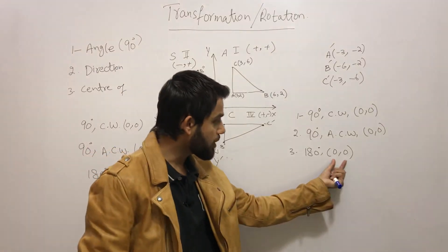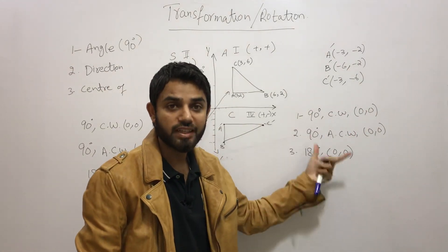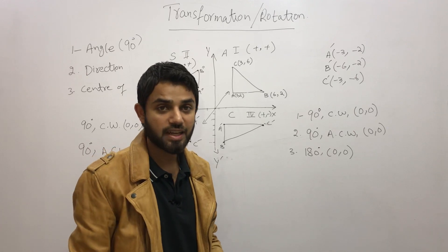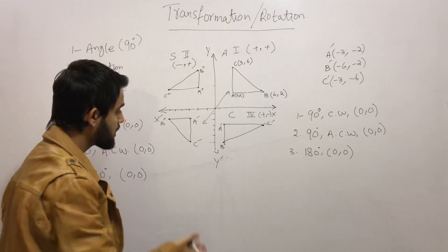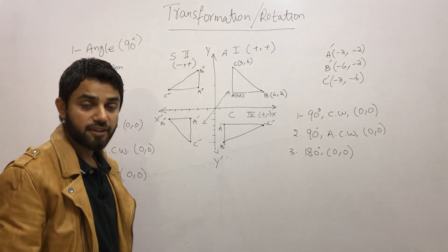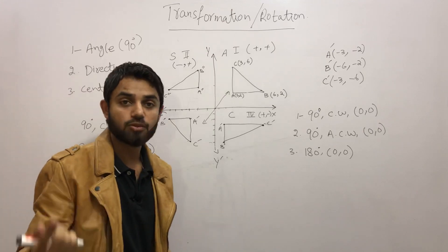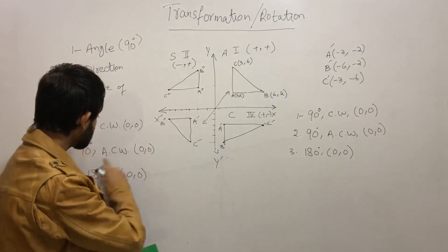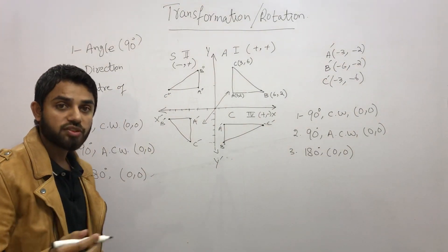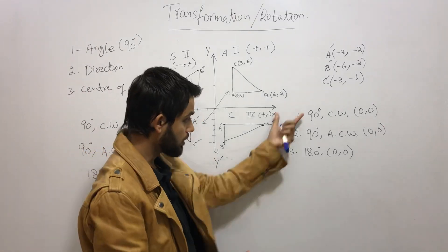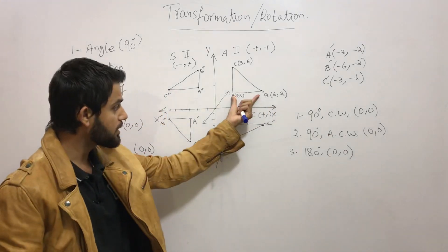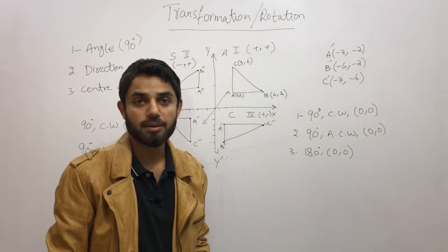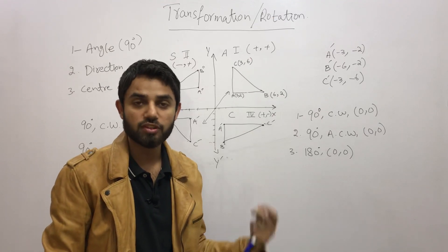Note that the center of rotation is not always (0, 0) — it can be any point like (2, 1). In IGCSE or GCSE exams, you may be given the object and image and asked to identify the transformation, state the degrees, and give the center of rotation — earning marks for each. We will cover these topics in future videos.